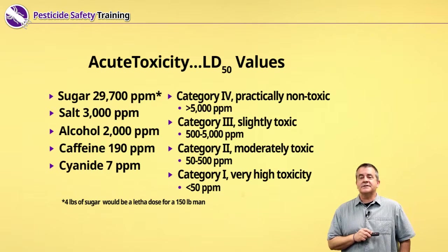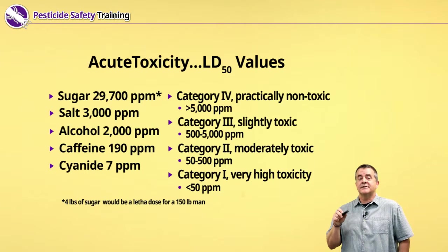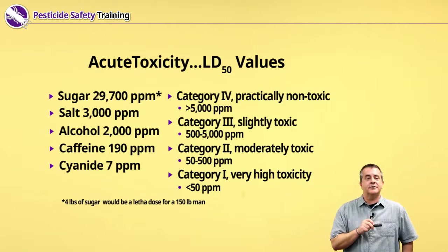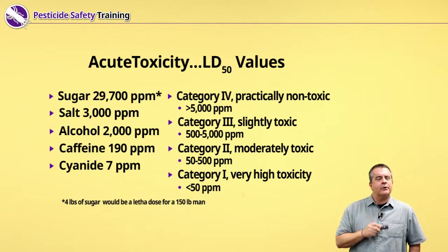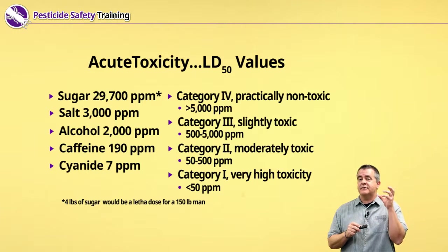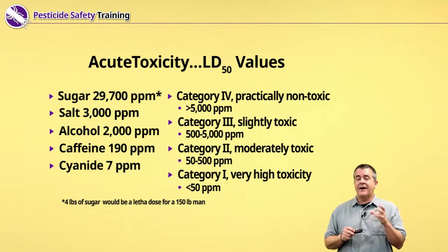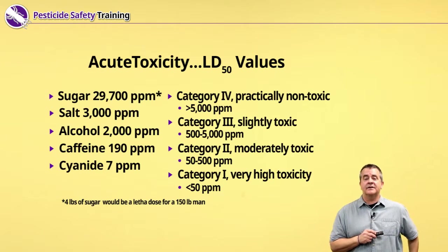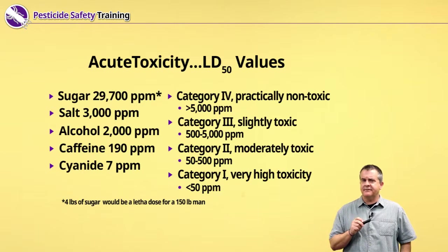Category three is the slightly toxic pesticides, with LD50 values of 500 to 5,000 parts per million. Category two — now we're getting more toxic — are the moderately toxic pesticides, with rat LD50 values of 50 to 500. And finally, at the top is category one: the very highly toxic pesticides, for LD50 values less than 50.